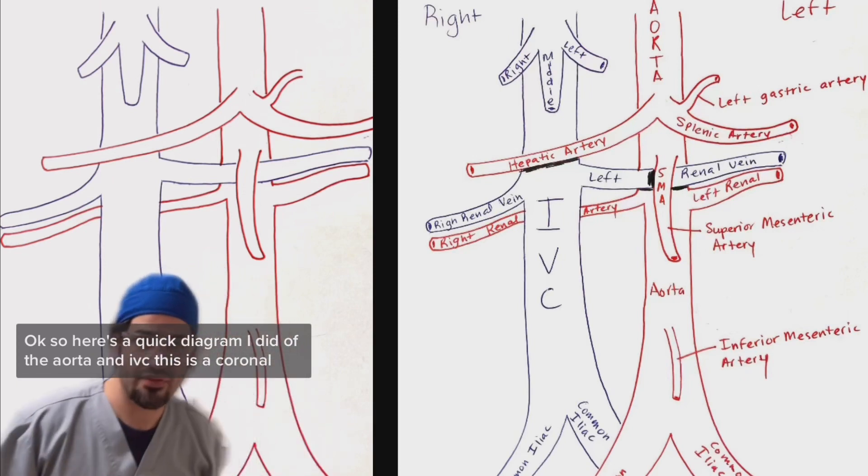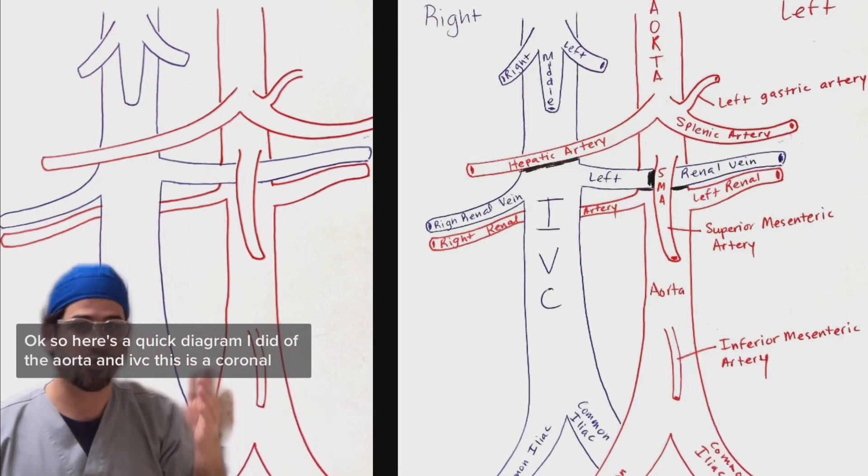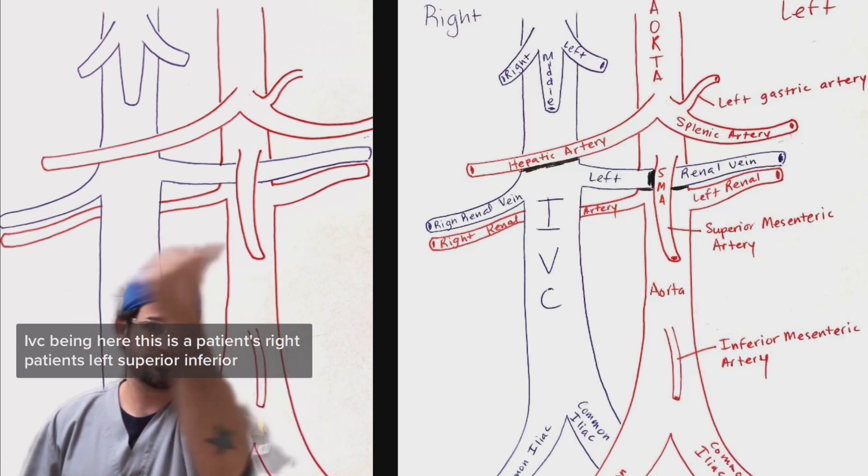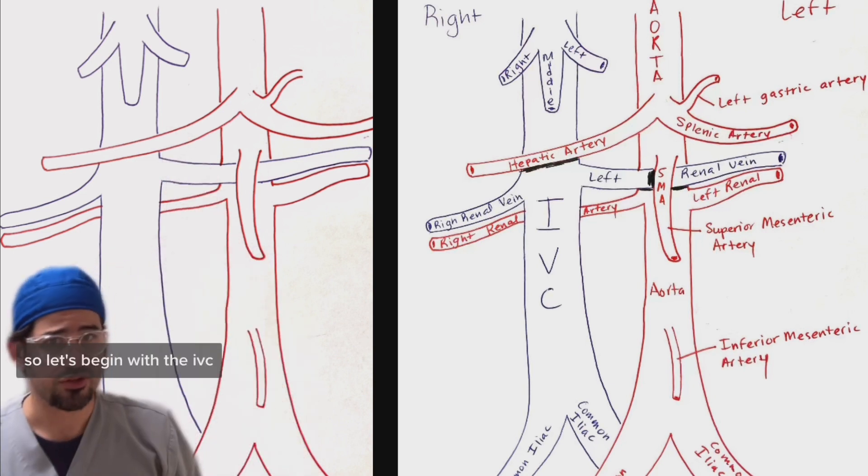Hey, so here's a quick diagram I did of the aorta and IVC. This is in coronal with the aorta being on this side, IVC being here. This is the patient's right, patient's left, superior, inferior. So let's begin with the IVC.